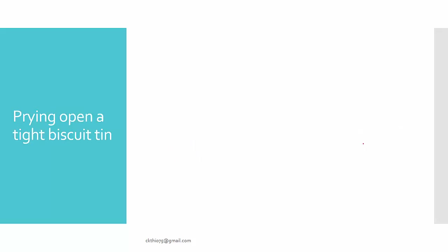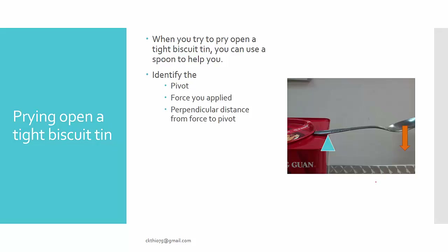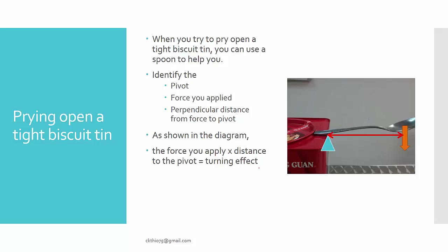Another application: try to pry open a tight biscuit tin. You can use a spoon to help you instead of using your fingers. Identify where the pivot is — you find the pivot is at the edge. Then identify where the force is applied and the perpendicular distance from the pivot to the force. As shown in the diagram, the turning effect is the force you apply multiplied by the distance to the pivot, which helps you pry open the lid more easily.